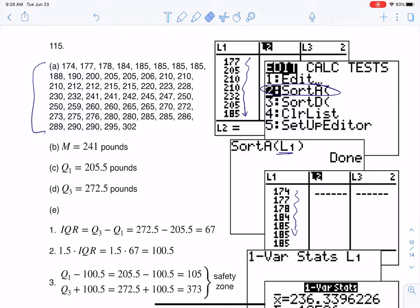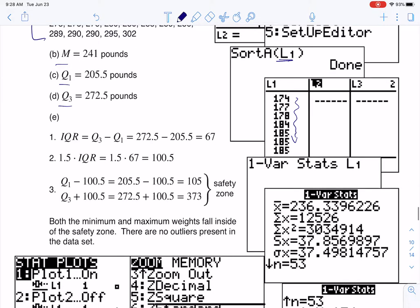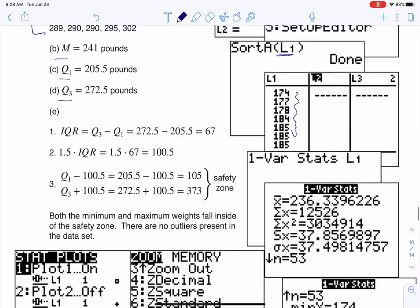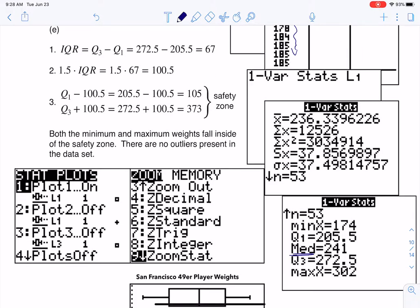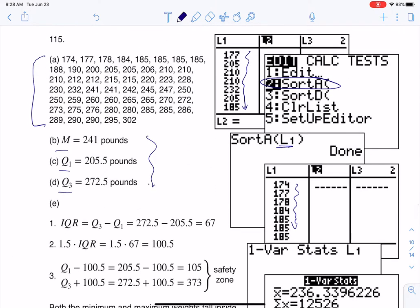Then parts B, C, and D are asking about statistics. They want the median, then Q1, then Q3. So what I'm going to do is run 1var stats, and then I'm going to find the median, Q1 and Q3. That's what you see me writing over here for my solutions. Now, because this is a numerical variable with units, it's not enough to just say the median is 241. You need to tell me it was 241 pounds.